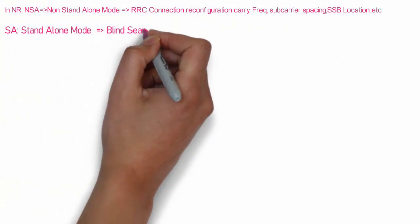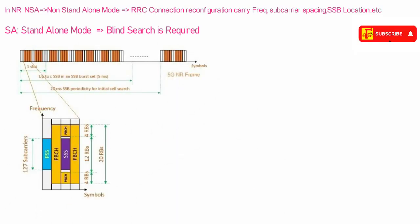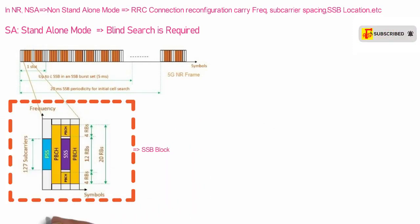In standalone mode, blind search is required. Why? Because you scan blindly to detect SSB before any RRC connection. After power on, you need to find the SSB location blindly. You try to decode SSB because you want to decode PSS and SSS to find the physical cell ID, and PSS and SSS exist in the SSB block, so you decode SSB first.